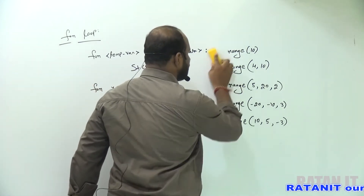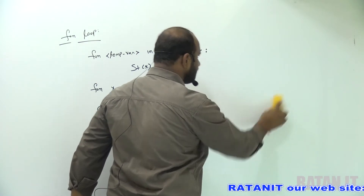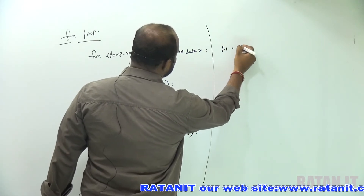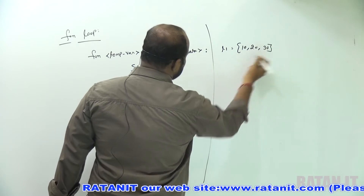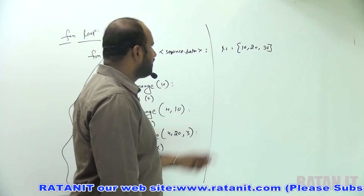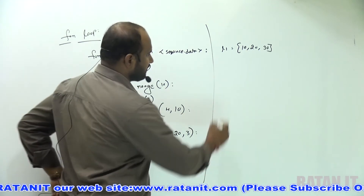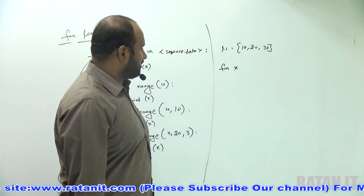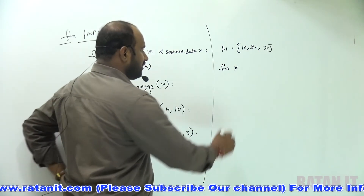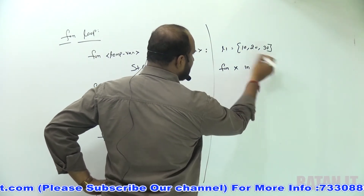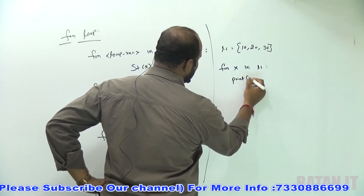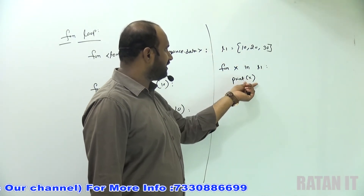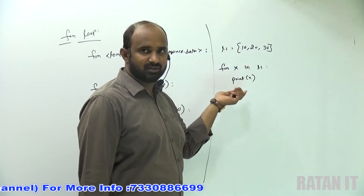Now I want to print list data. Say the list contains data in square brackets: 10, 20, 30. If you want to print that data, the syntax is: for x in l1, colon — print(x). So you are passing the l1 list values to x and printing the x value. Then 10 is printed, 20 is printed, 30 is printed.